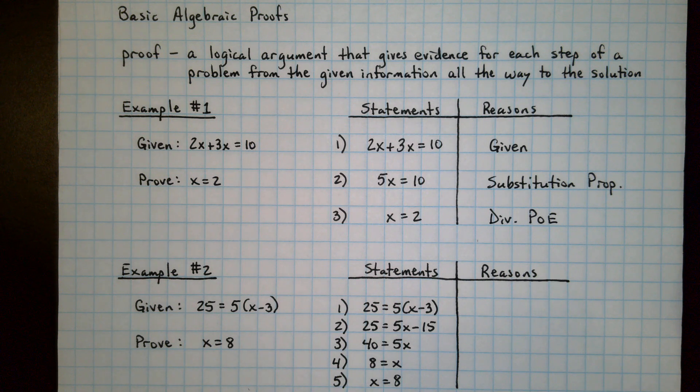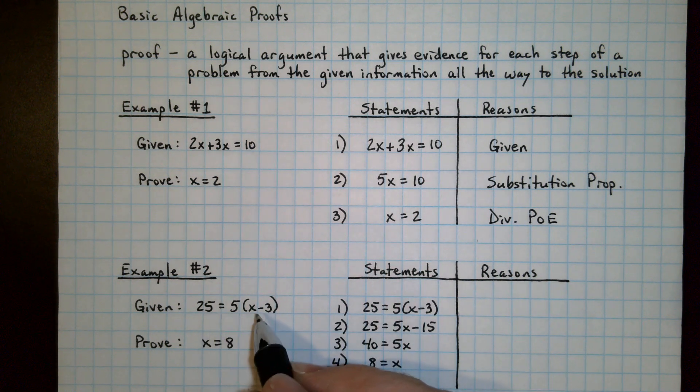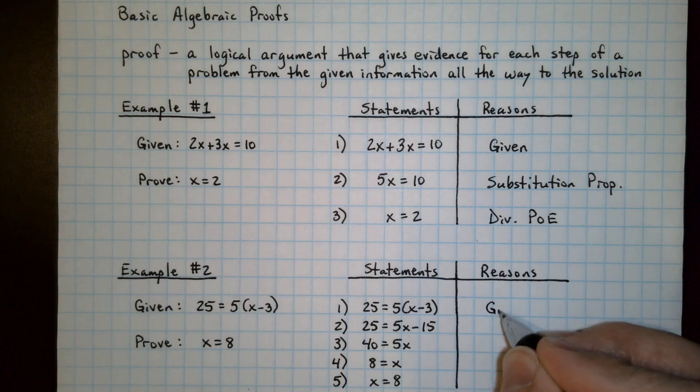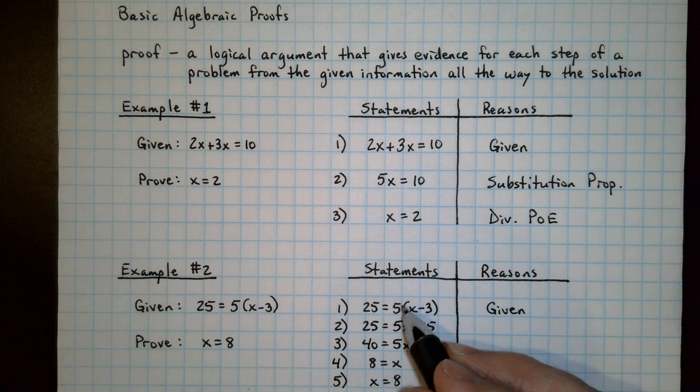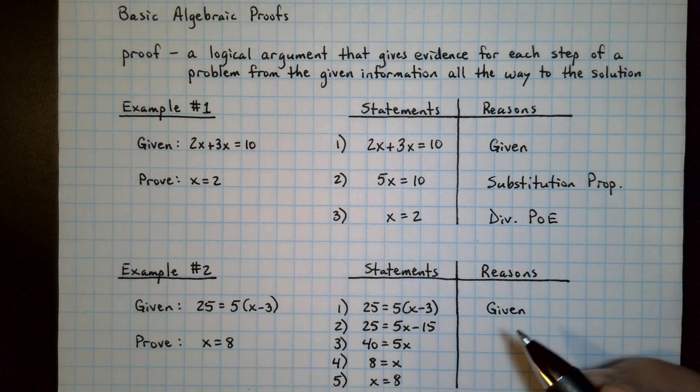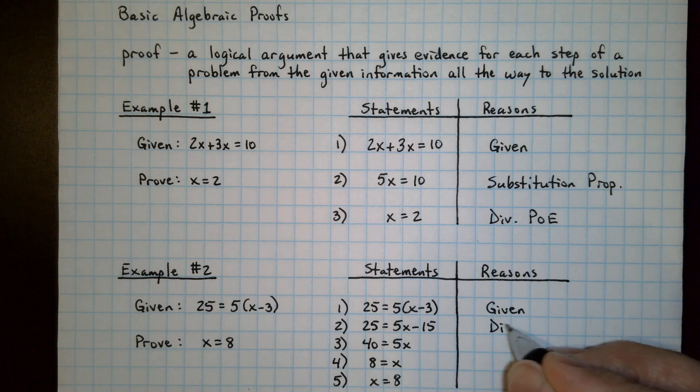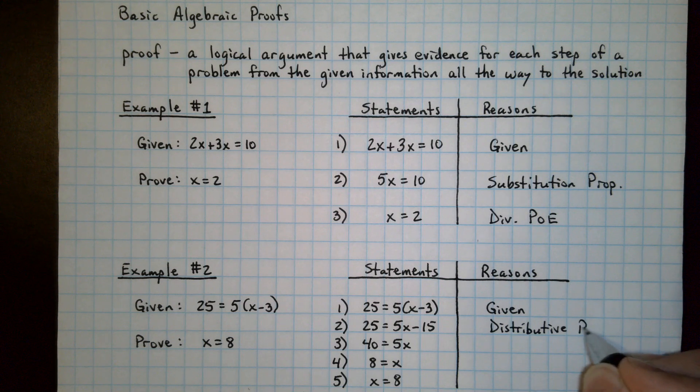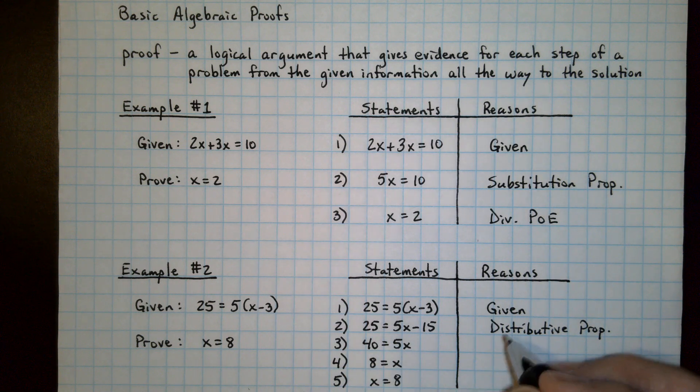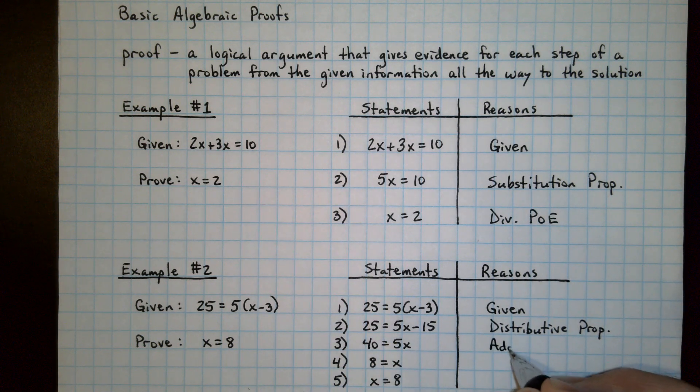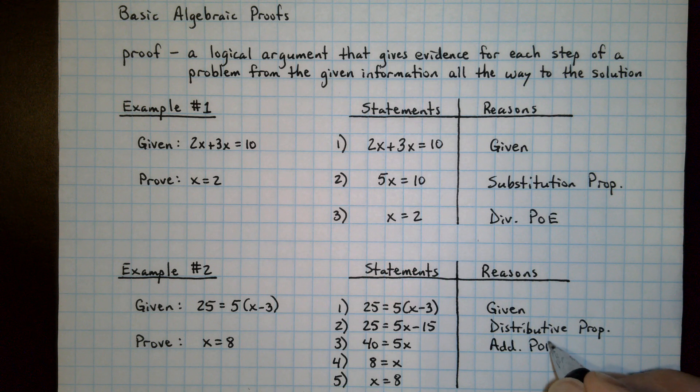In example 2, we have this given information that's been restated, so again we can put given. The next line we have to deal with this parenthesis. The 5 is multiplied by each item, and that's a distributive property being applied there. Then we would be adding 15 to each side. Since it's to both sides, that's the addition property of equality.